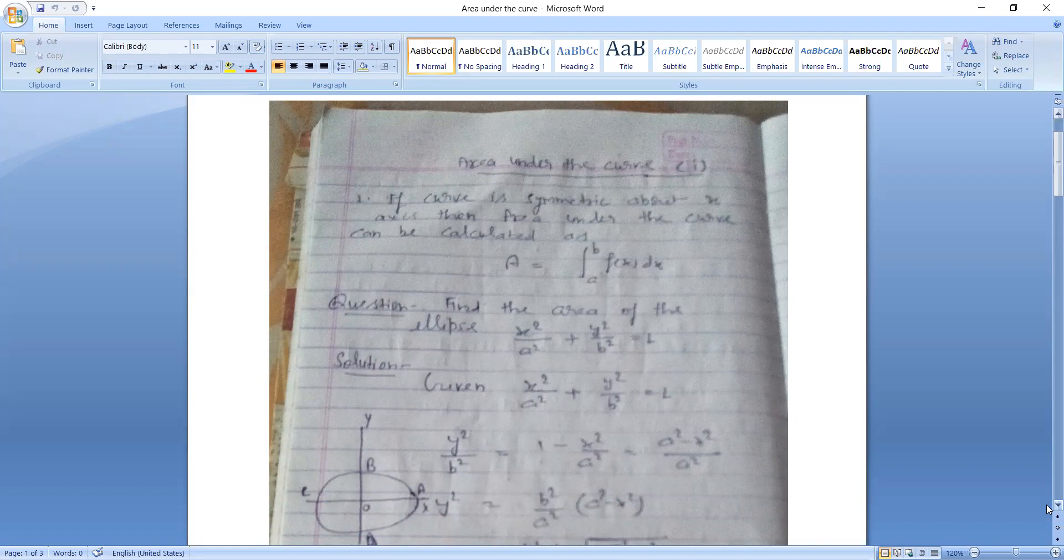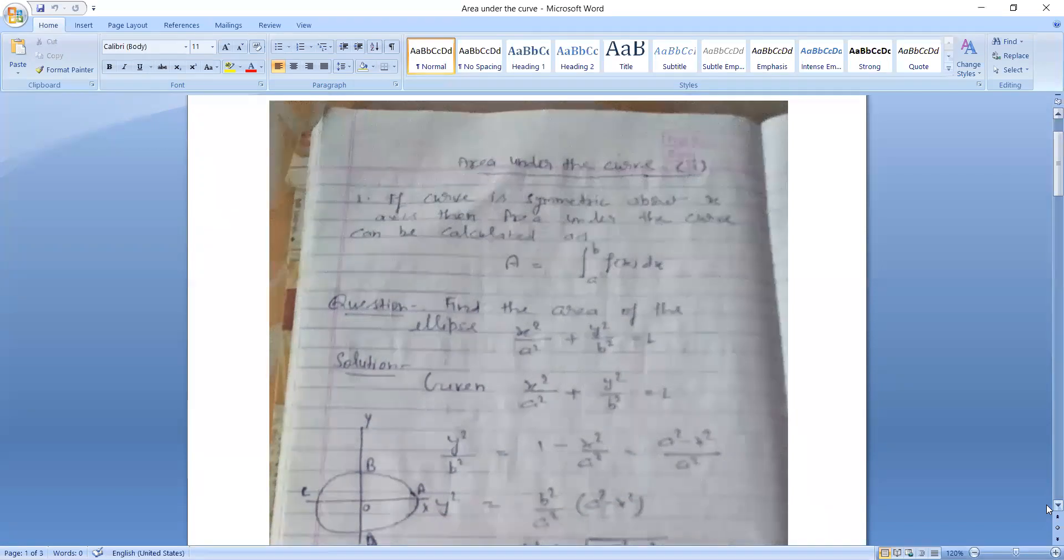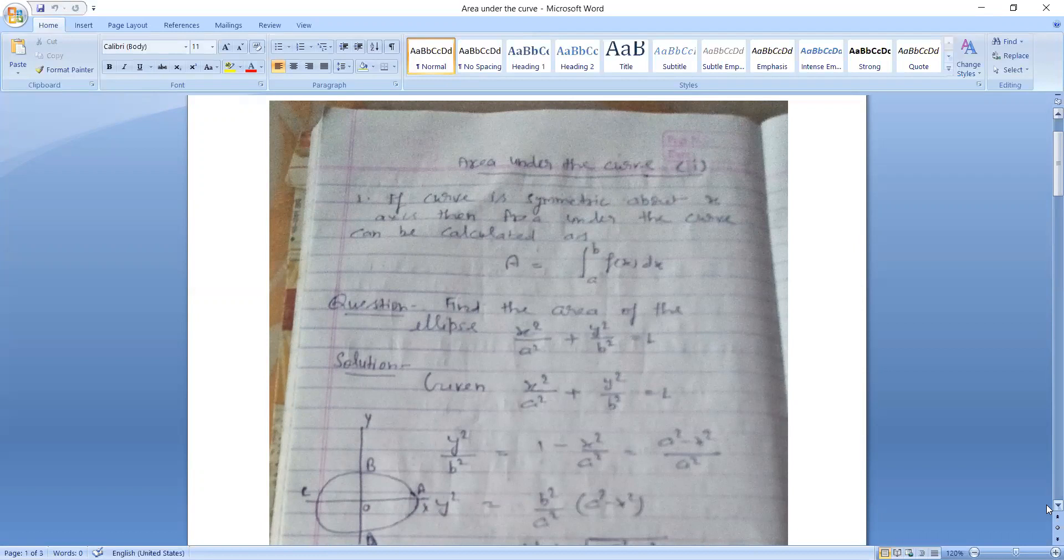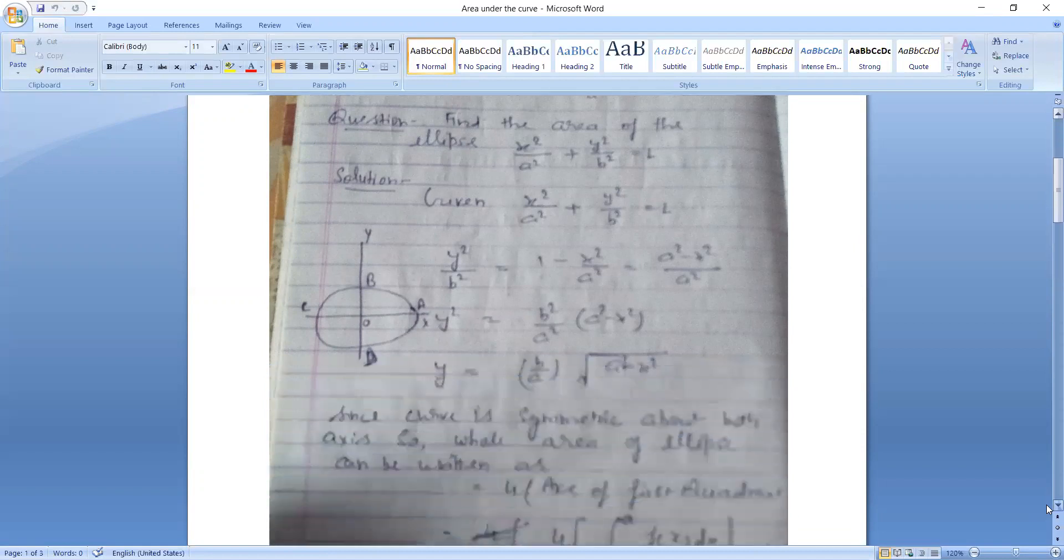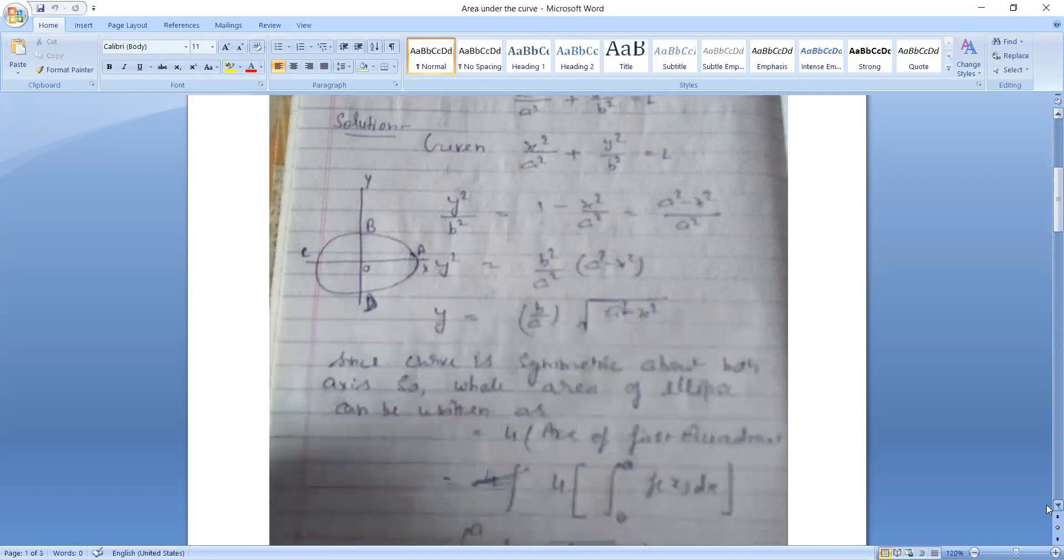Given X square upon A square plus Y square upon B square is equal to 1, then Y square upon B square is equal to 1 minus X square upon A square. That is A square minus X square the whole of square or Y is equal to B upon A root A square minus X square.